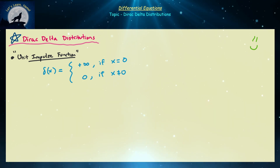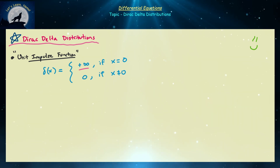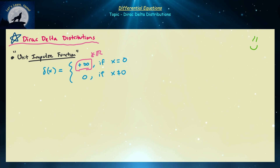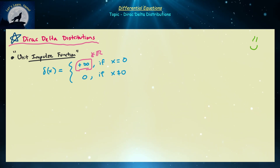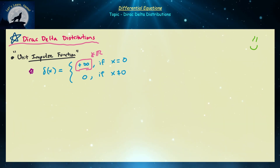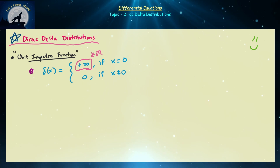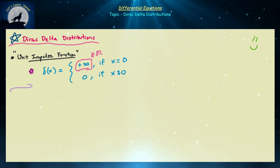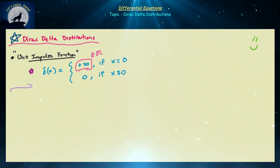The reason it's called the Dirac delta distribution instead of a function is because its output is positive infinity when x equals zero and zero otherwise. Since positive infinity is not a real number — some call it an extended real number — it's not really a function in the classical sense. So this is how we presented its definition: δ(x) = ∞ for x = 0 and zero otherwise. Now I want to introduce another definition that's more useful, go through more properties, a related function, and an application.